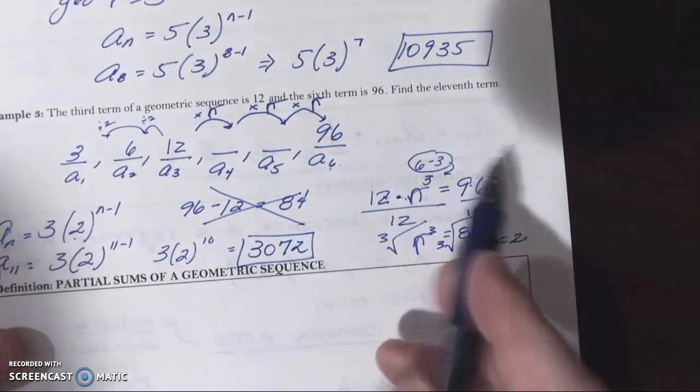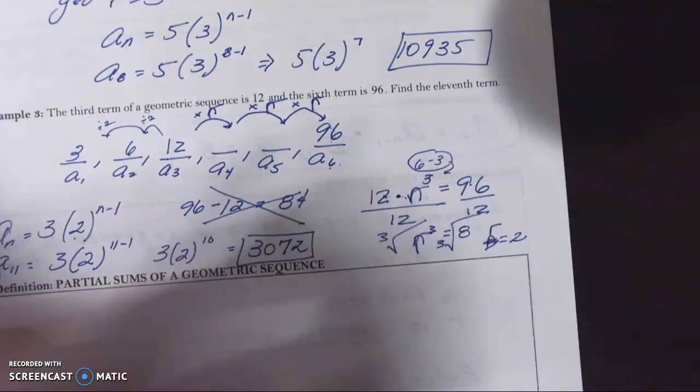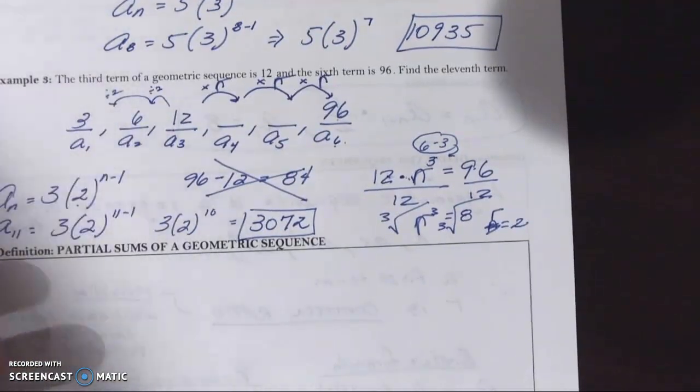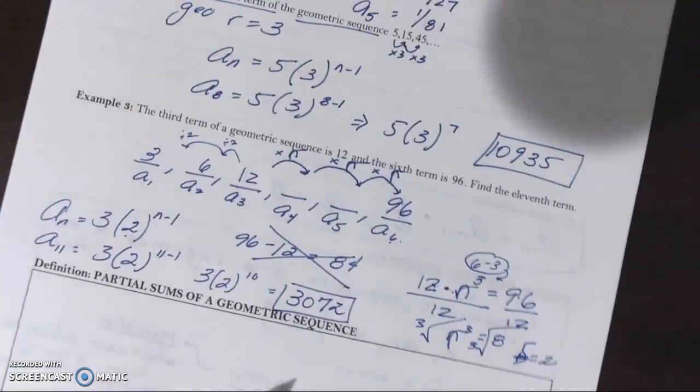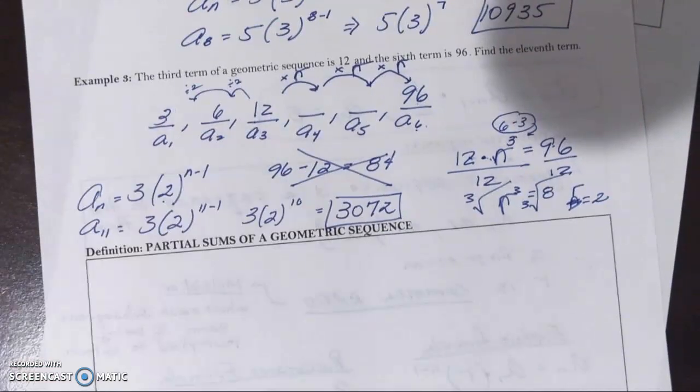If you want to check your work, you can start at 96, multiply until you get to the 11th term, and hopefully we'd come up with the same thing. And we will continue on with our partial sums in the second part of this video.